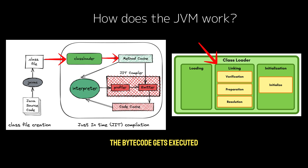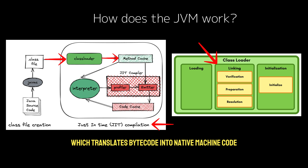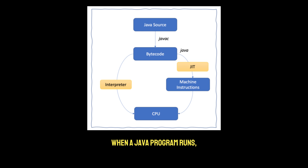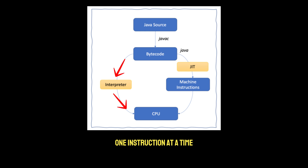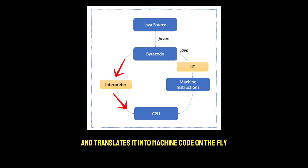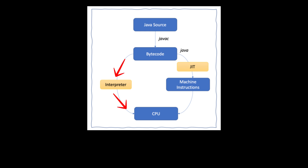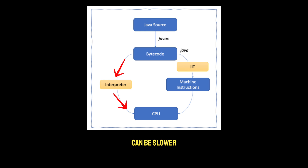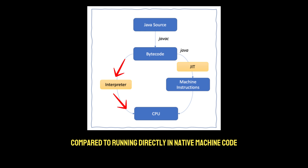Finally, the bytecode gets executed. This involves the Just-in-Time compiler, which translates bytecode into native machine code for faster performance. Initially, when a Java program runs, the JVM interprets the bytecode one instruction at a time. This means it reads the bytecode and translates it into machine code on the fly, which allows the program to start executing immediately. However, interpreting bytecode one instruction at a time can be slower compared to running directly in native machine code.